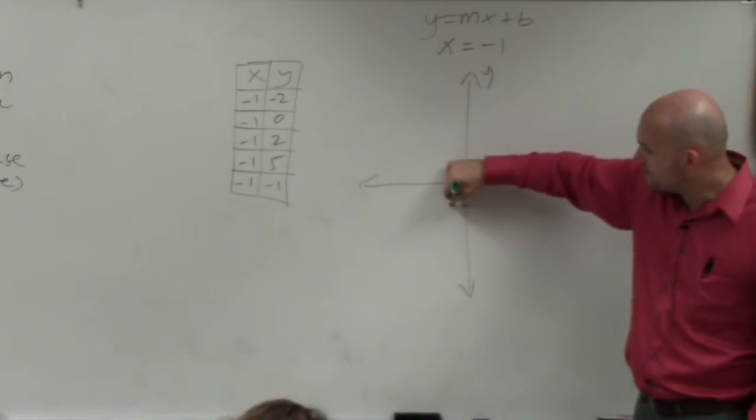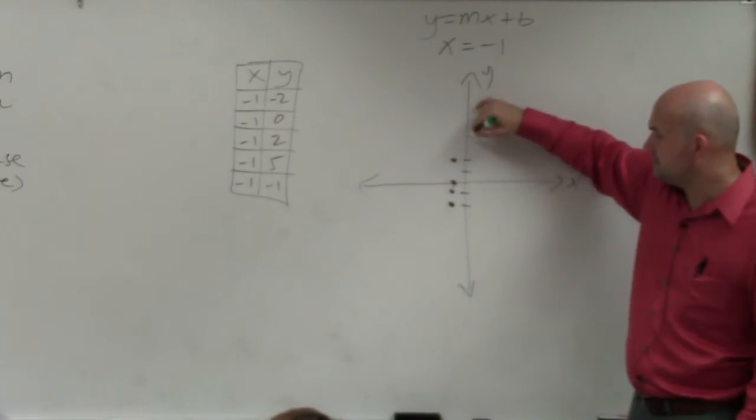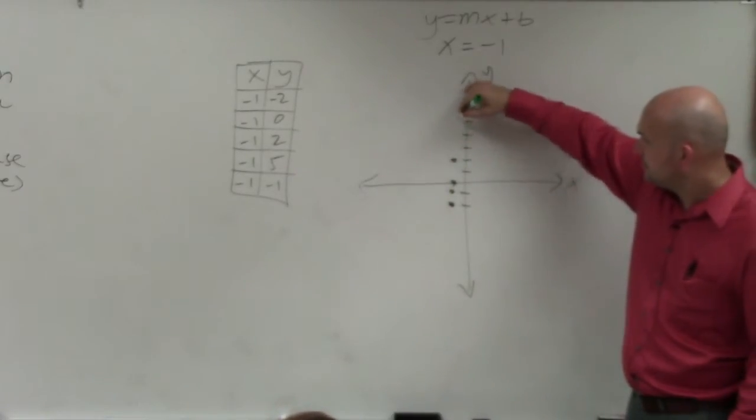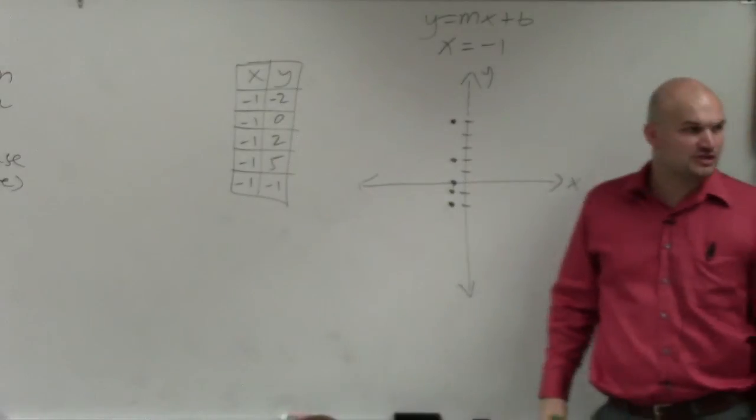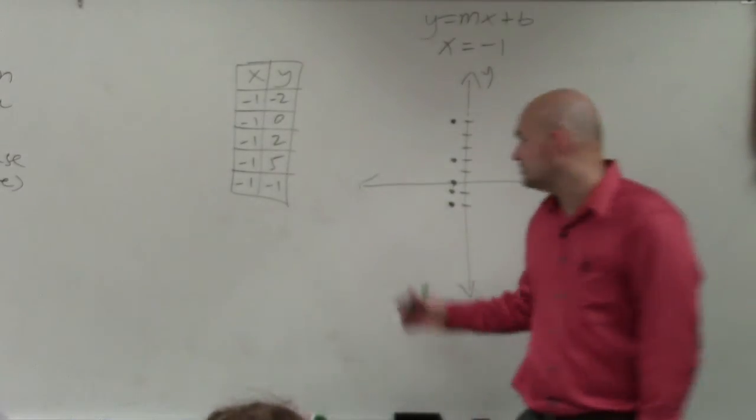What about x equals negative 1, y equals negative 2? What about negative 1? What about positive 2? What about positive 5? You guys kind of see a pattern emerging of what these points are going to connect to make? A vertical line.